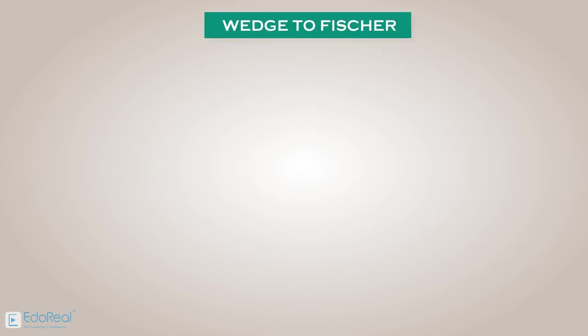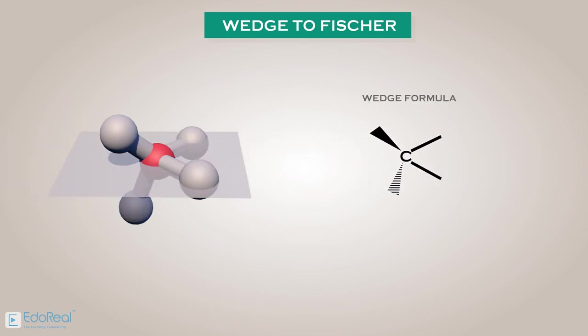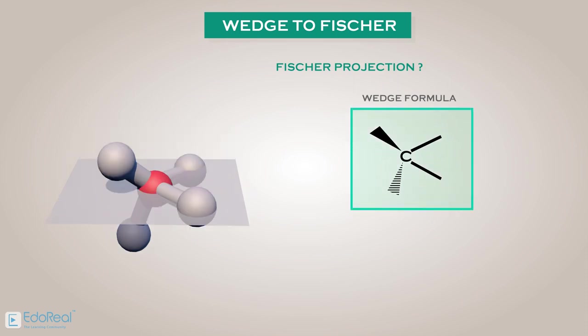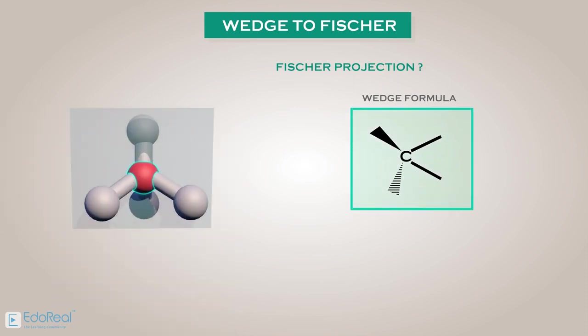Converting from wedge to Fischer projection. If we were given a molecule with the wedge formula, as if two bonds are in the plane of the paper, and one bond is above the plane, and the other is below the plane. Then, how to draw the Fischer projection? The given projection is not according to the Fischer projection, as the Fischer projection needs only chiral carbon on the plane of paper, and two bonds should be towards the observer, and two bonds should be away from the observer.